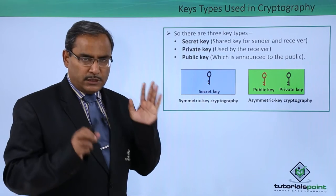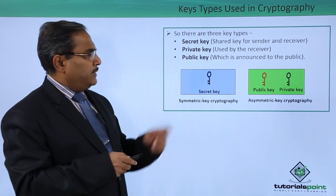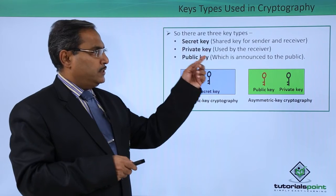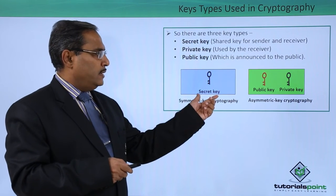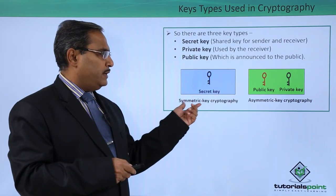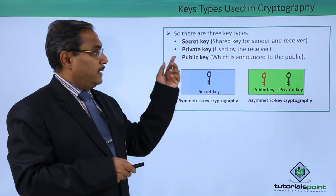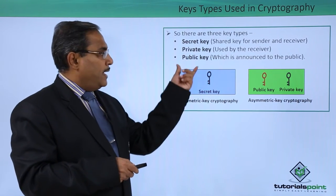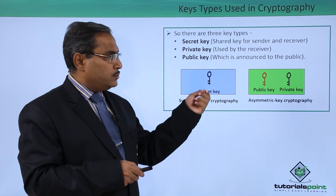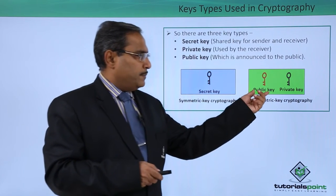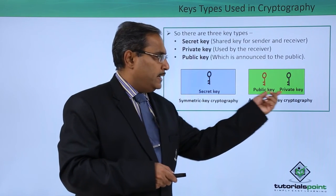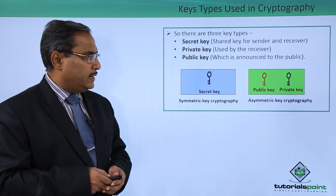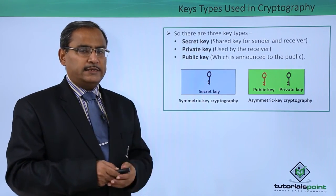In summary, there are three types of keys. One is the secret key, which is the shared key for sender and receiver used in symmetric key cryptography. The other two are the private key used by the receiver and the public key announced to the public — both used in asymmetric key cryptography.